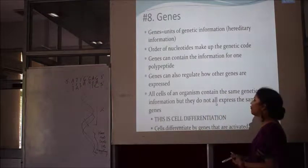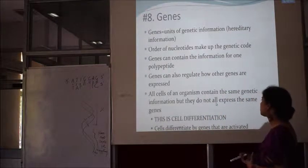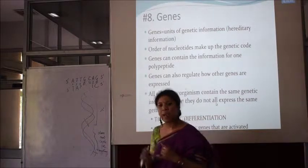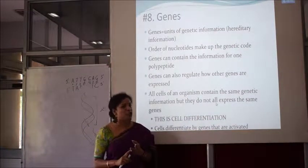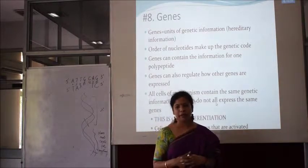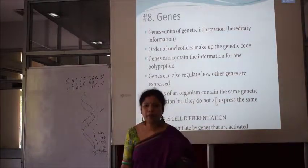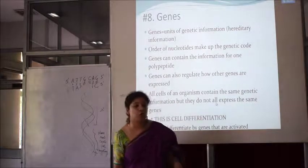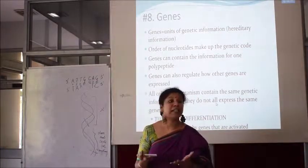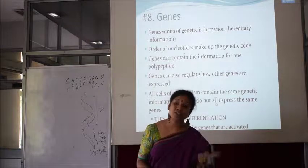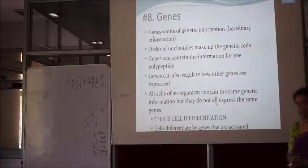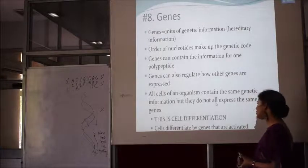All cells of an organism contain the same genetic information, but they do not all express the same genes. We all have 23 pairs of chromosomes and the same number of genes for complexion, IQ level, eye color, hair type — but they differ because the genetic information received from our parents is different. Based on which gene is dominant and which is recessive, this leads to cell differentiation — cells differentiate based on which genes are activated.